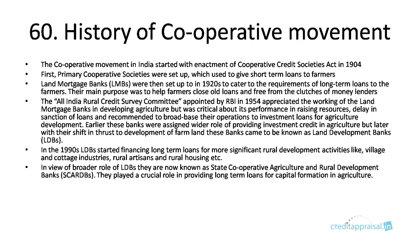In this chapter we will discuss the history of the cooperative movement very briefly. The cooperative movement of India started with the enactment of the Cooperative Credit Societies Act in 1904. First, primary cooperative societies were set up and they used to give short-term loans to farmers.